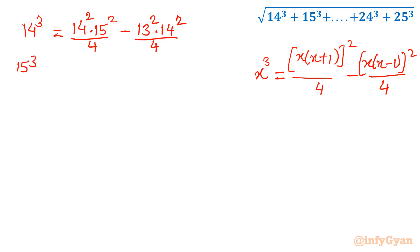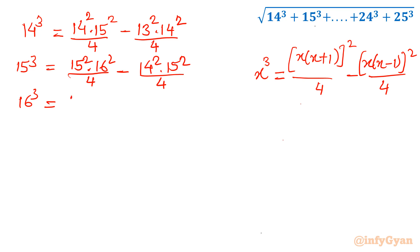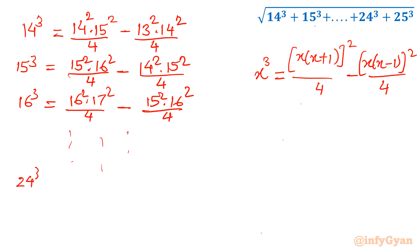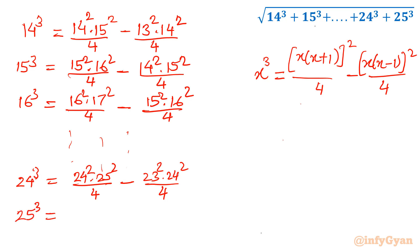Similarly, 15³ = 15² times 16² over 4 minus 15² times 14² over 4. And 16³ = 16² times 17² over 4 minus 15² times 16² over 4. Continuing in this pattern up to 24³ = 24² times 25² over 4 minus 23² times 24² over 4. The last number 25³ = 25² times 26² over 4.